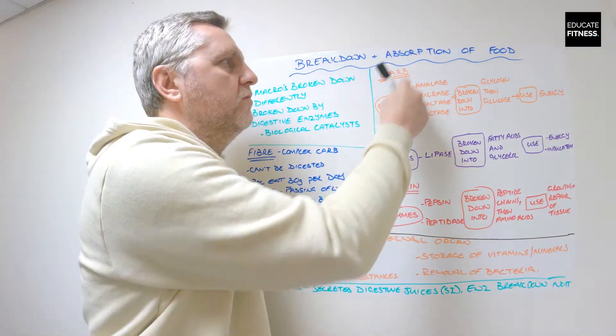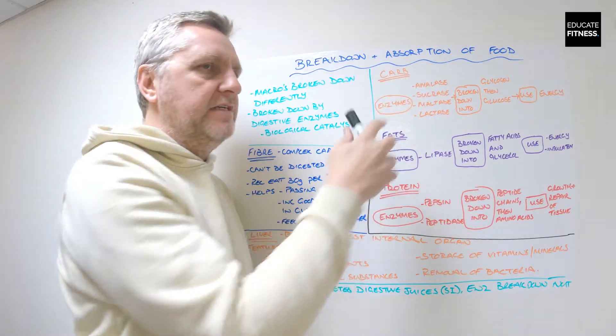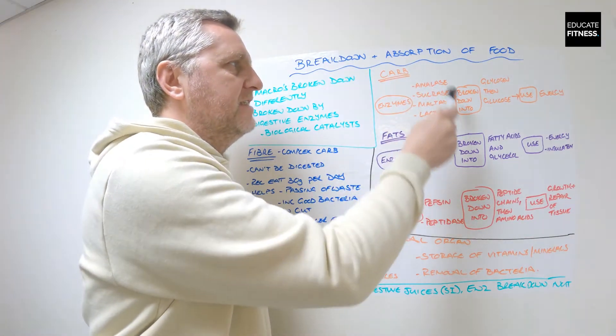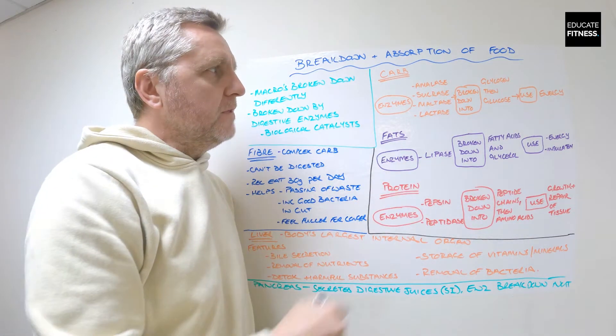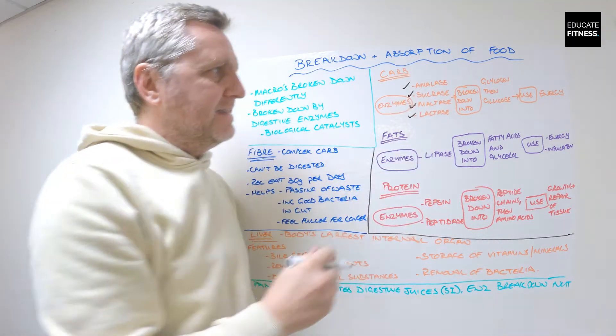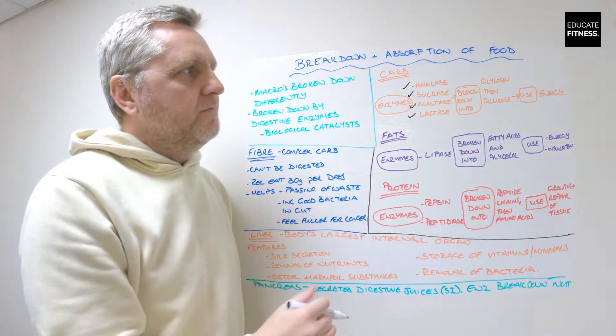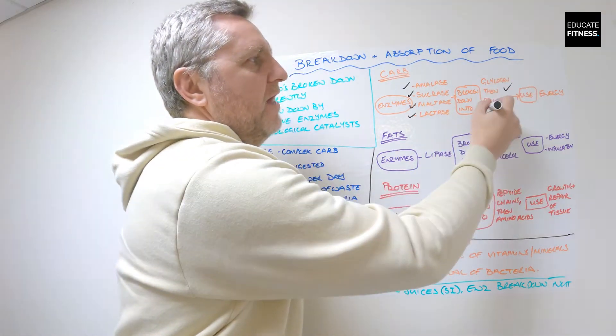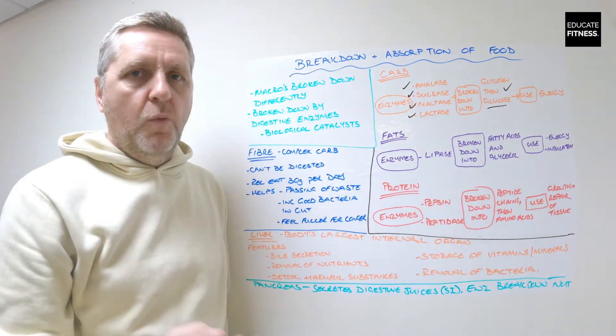Don't worry too much about the details of these, just focus on the enzymes. So for carbs: amylase, sucrase, maltase and lactase—this is all broken down into glycogen and then glucose. What is the use? Obviously carbs we use for energy.